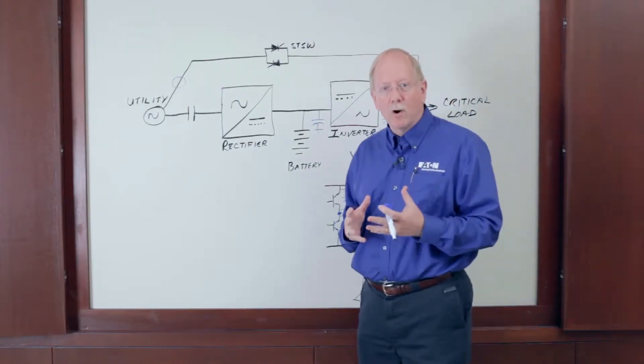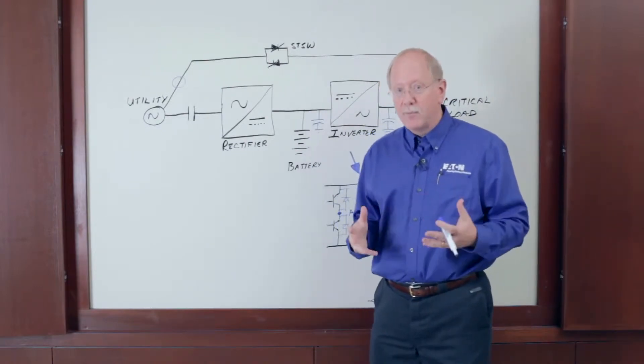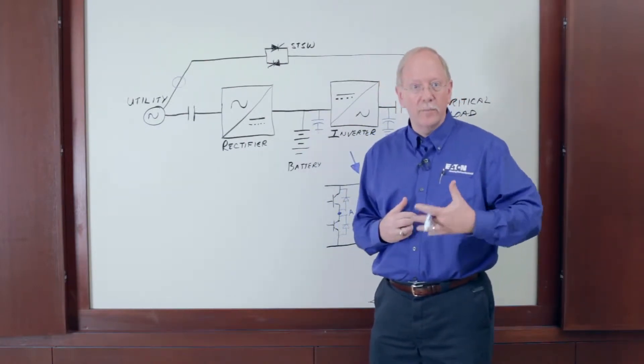So in traditional ECO mode, the plan was to basically turn on the static switch and shut off the UPS. The problem was it takes too long to start a UPS from shutdown mode.